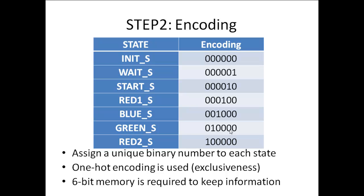We can encode the different states in many ways, but for this lab we will use one-hot encoding. One-hot encoding is an exclusive coding where each state has a unique six-bit code. In the wait state the LSB is 1; in the start state the second bit is 1; likewise for red, blue, green, and red two states, bits 3 through 6 are each set to 1 — it's like a 1 being shifted left one position for each state.